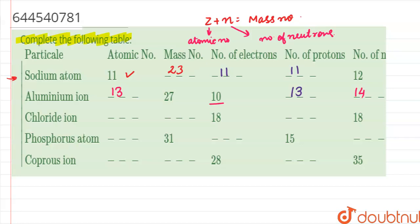For the chloride ion, the atomic number is 17 and the number of neutrons is 18, so the mass number is 17 plus 18, which equals 35. The number of protons in the chloride ion equals the atomic number, which is 17.